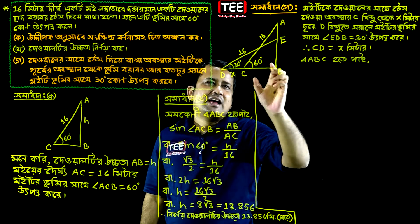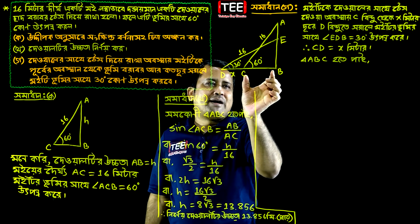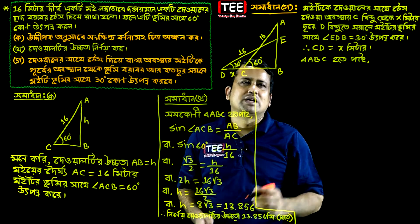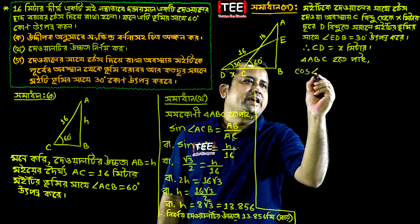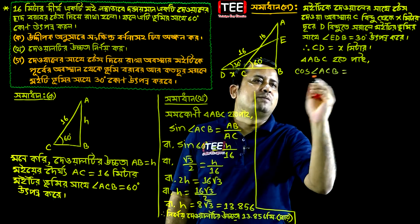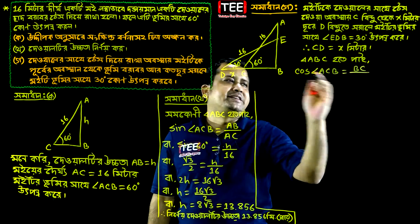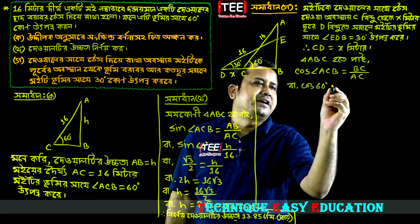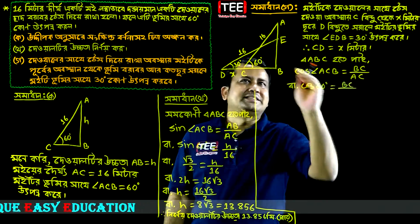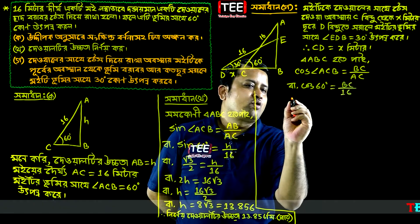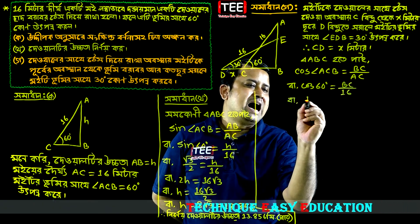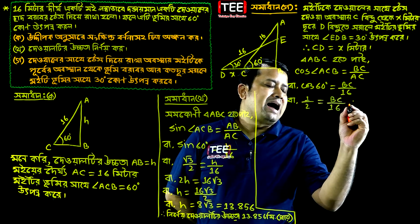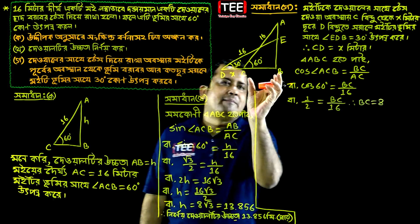AC is shown here. Looking at AC, from the base of the right triangle, the relation between the sides gives us: is equal to BC divided by 16. If we ask another question, BC is equal to 5 is 8. So, BC is equal to 8.